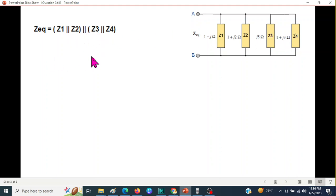And we'll use this formula. I hope you remember that when two elements are in parallel, it is R1 × R2 divided by R1 + R2. So in case of Z, it will be something like this.